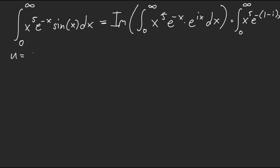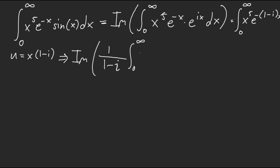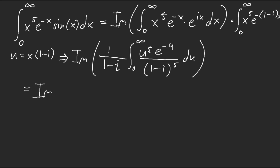With u = (1-i)x, we get x = u/(1-i), and the integral becomes 1/(1-i)^6 times the integral from 0 to ∞ of u⁵ e^(-u) du, where the (1-i)^5 comes from substituting x⁵. That integral is exactly the gamma function — it gives us 5 factorial. So my answer is literally 5! / (1-i)^6.